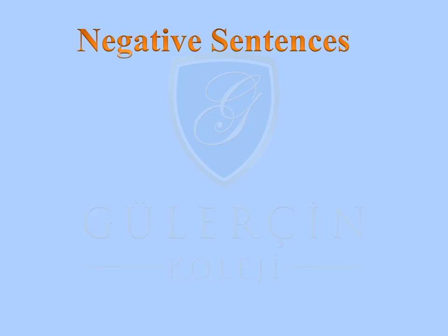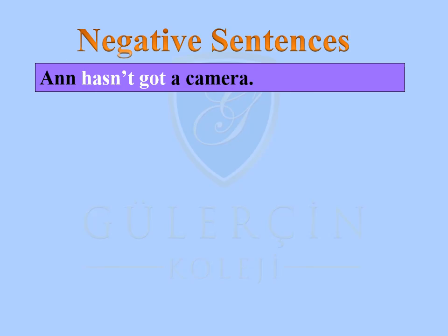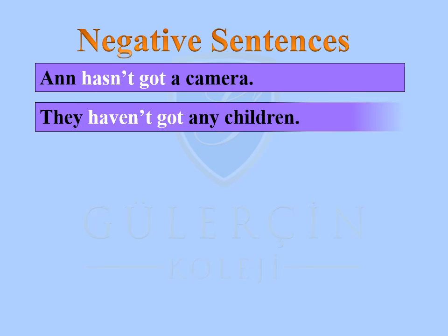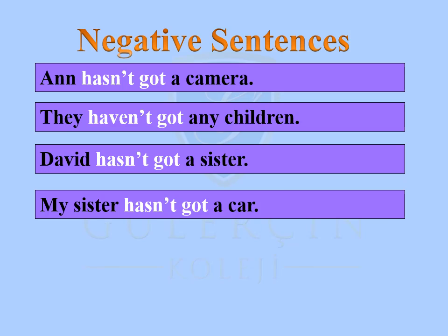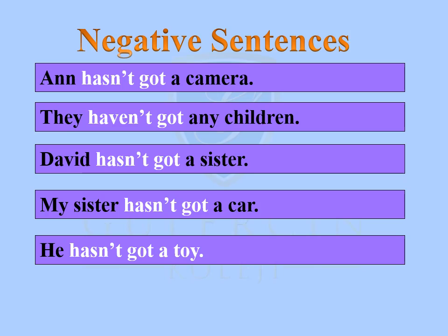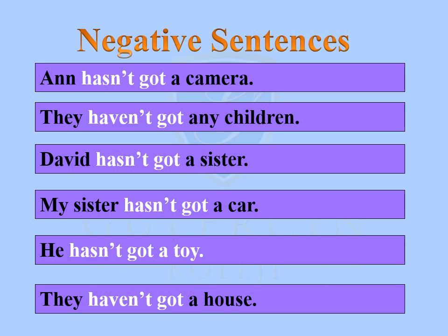Negative sentences: Anne has not got a camera. They have not got any children. David has not got a sister. My sister has not got a car. He hasn't got a toy. They haven't got a house.